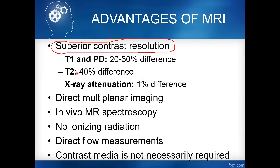For better tissue differentiation, use T2. T2 can differentiate tissues by 40%. So when asked what is the best parameter for tissue contrast, the answer is T2 relaxation.